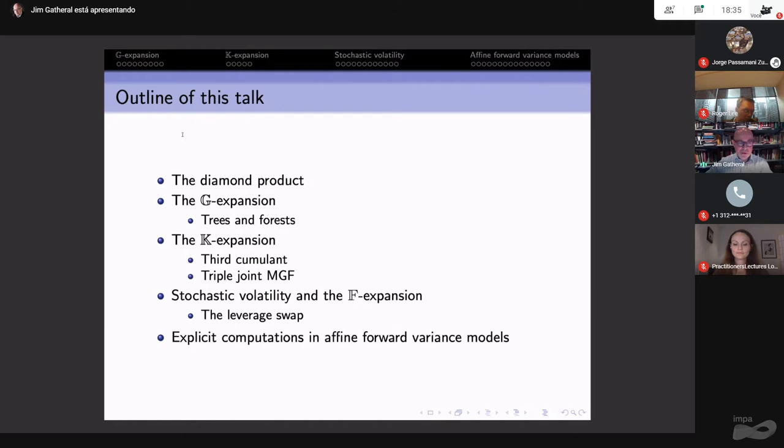Last time I spoke at Rio in 2018, I presented the diamond product and the exponentiation theorem. The proof was kind of like magic. You might think magic is a good thing, like Erdős's proof from the book. However, now that I see the proof Peter Fritz came up with, this is definitely the proof from Erdős's book. We'll explain the remarkably simple origin of the forest expansion, give its convergence properties, and attempt to give a sense of its wide applicability.